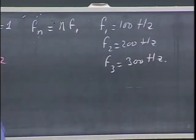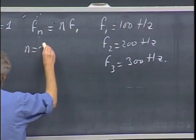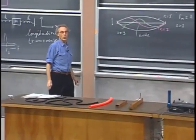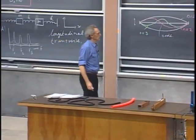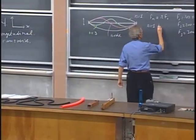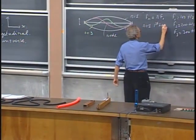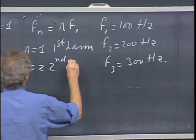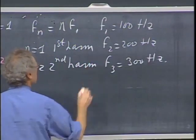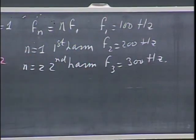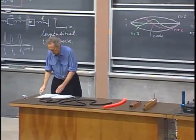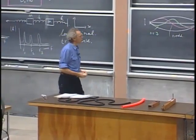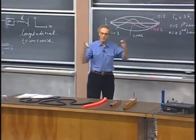We call N equals one the first harmonic. Some books also call it the fundamental. I will call it the first harmonic. And we call N equals two the second harmonic, and so on. N equals three is the third harmonic. So we're going to get a series of discrete frequencies which are equally spaced.